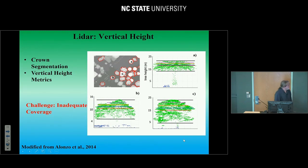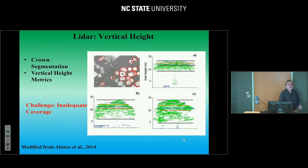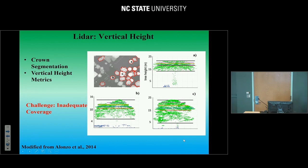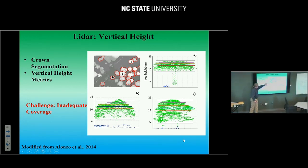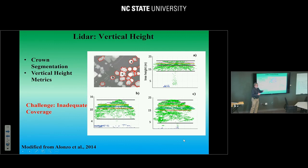In the vertical domain, we have LiDAR, which can be really valuable. One of the key areas is crown segmentation — creating objects out of collections of pixels — and vertical height metrics. This is work from Michael Alonzo showing watershed segmentation-created crown objects, and what the actual point cloud looks like. You can get things like the height of the tree, the base of the crown, and the median distribution of height returns — all from LiDAR information — which can be useful for urban forestry applications. The challenge with LiDAR is simply that there's not enough of it.